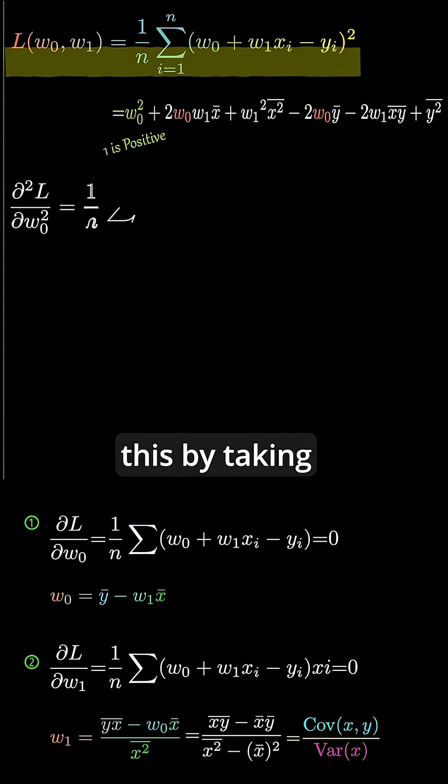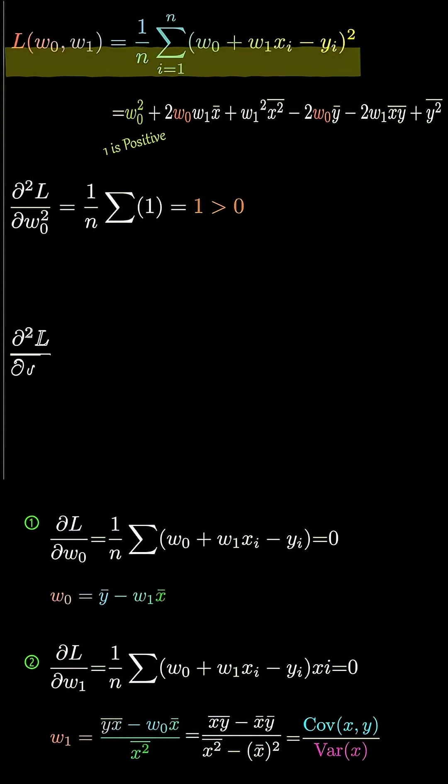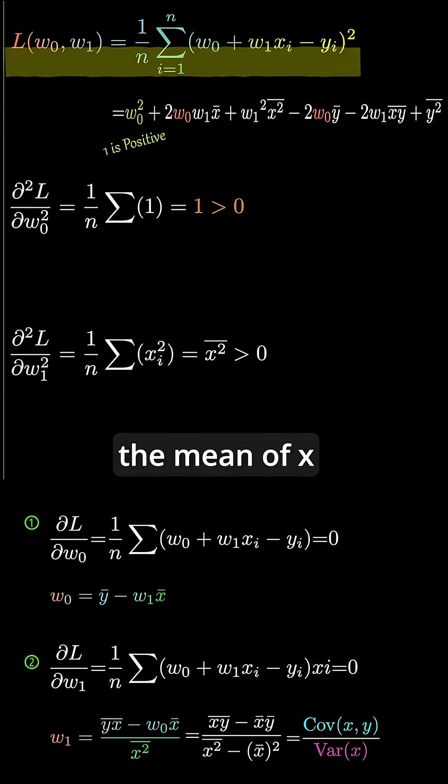We can also check this by taking second derivatives. The second derivative of L with respect to w0 is 1, which is positive. The second derivative with respect to w1 is the mean of x squared, which is also positive.